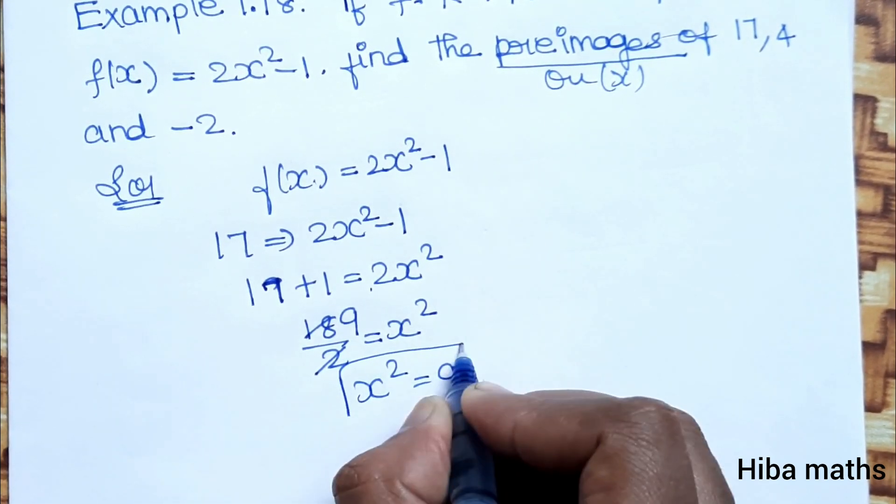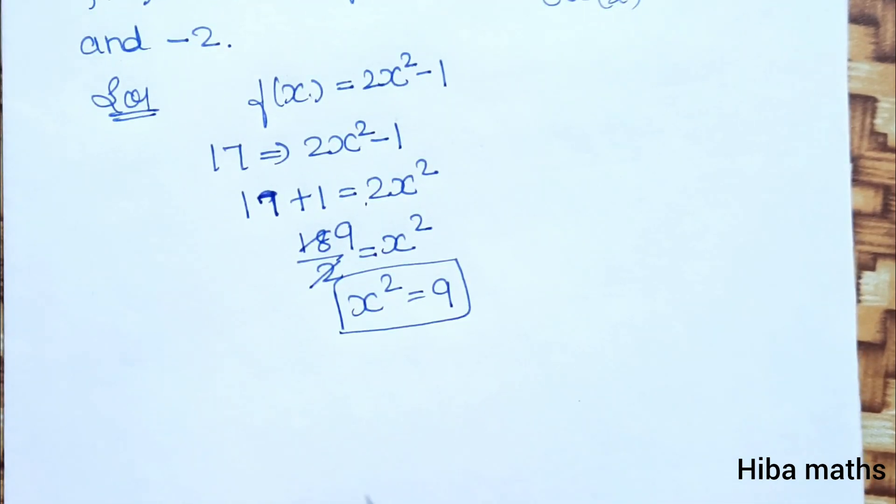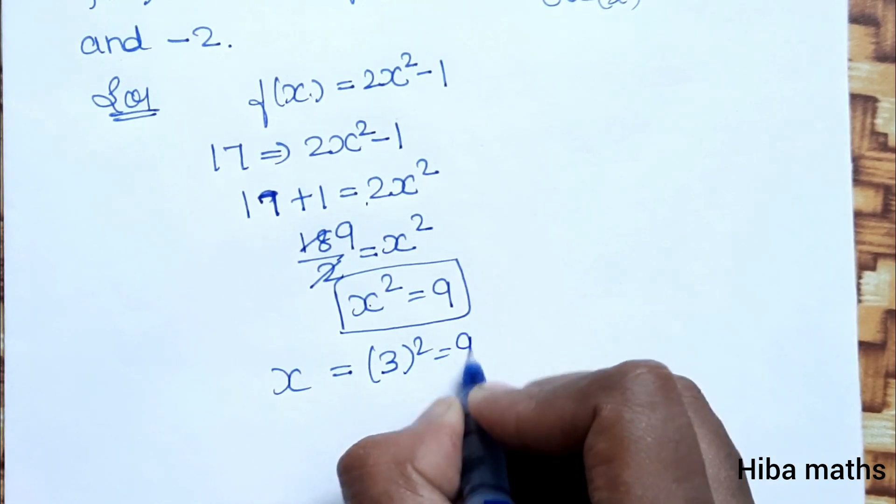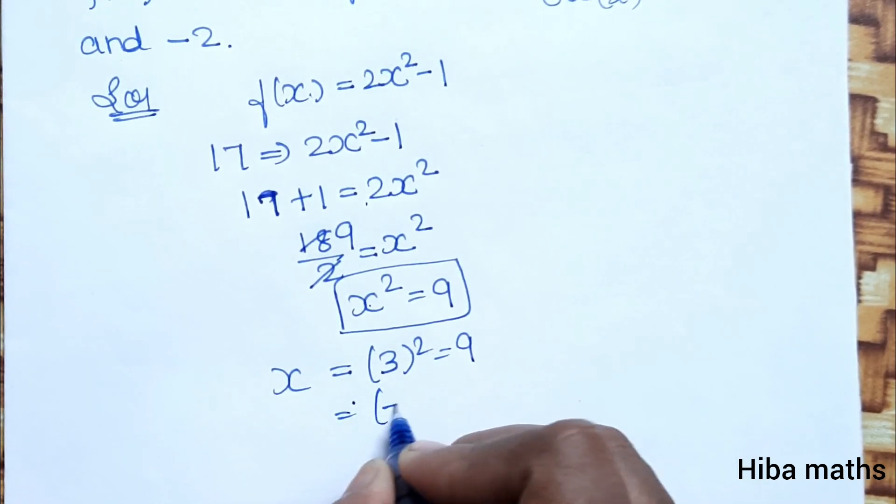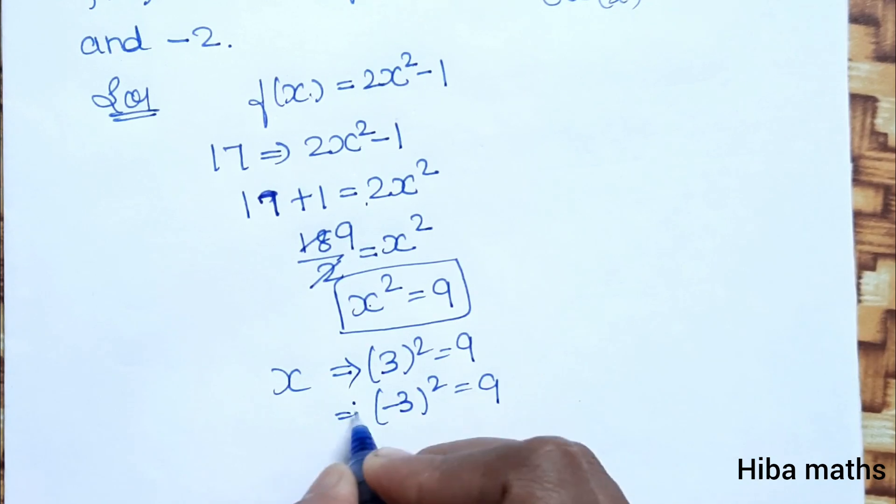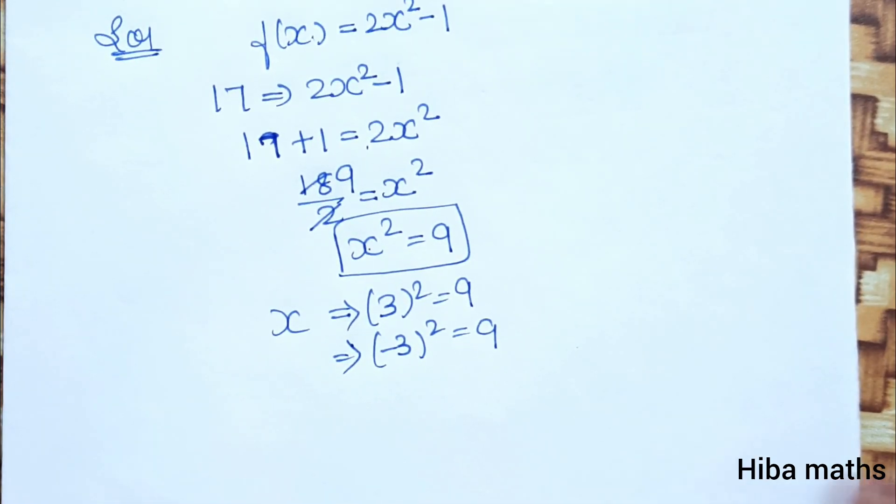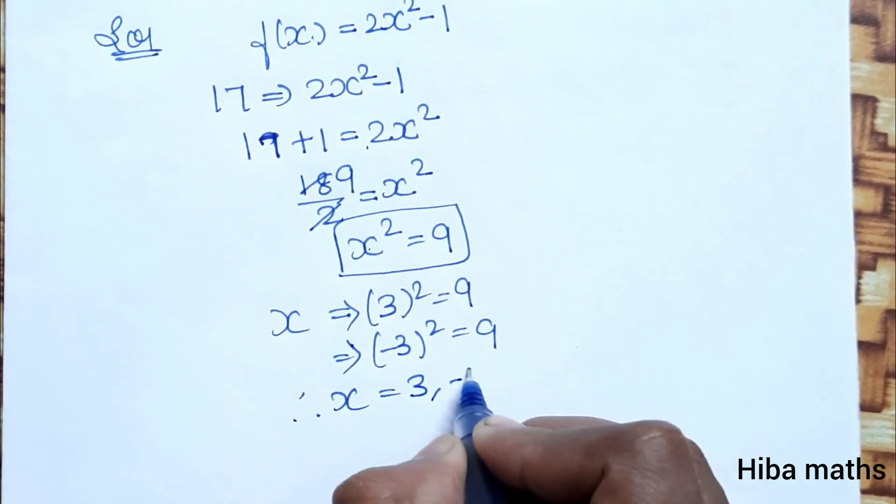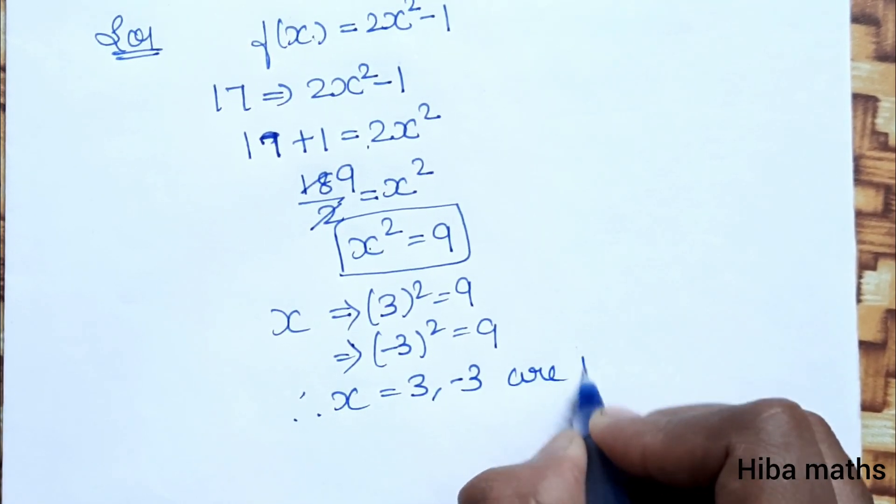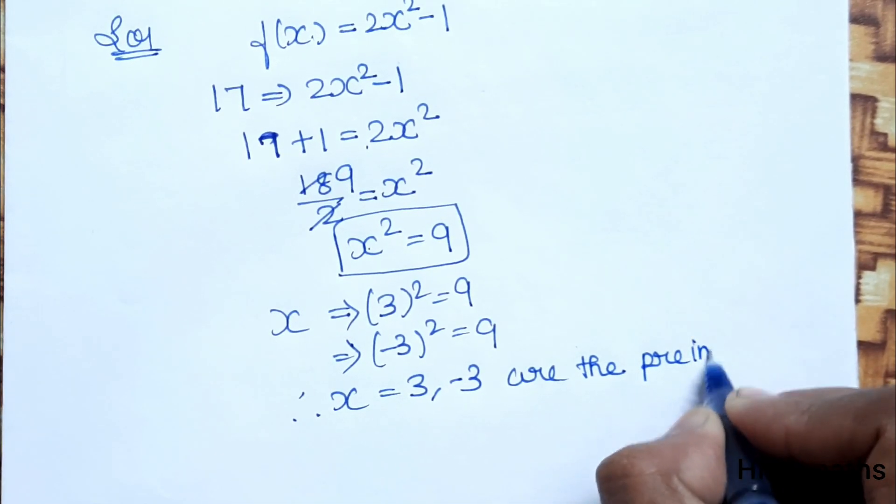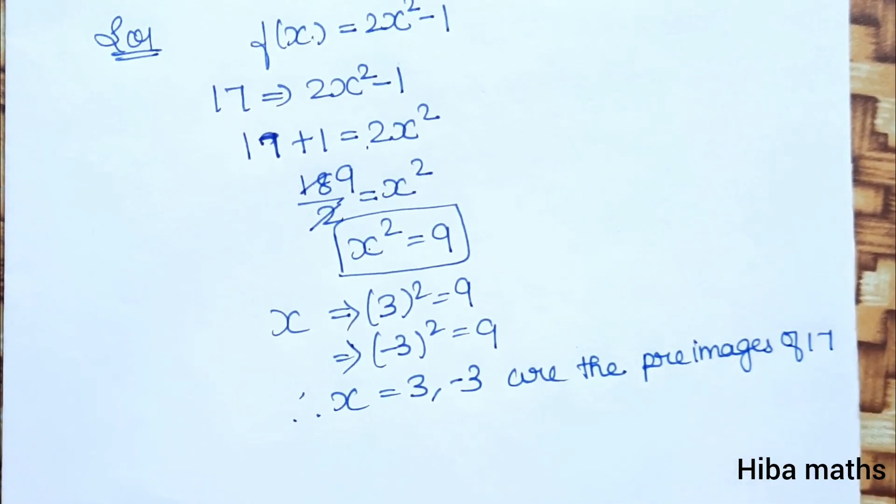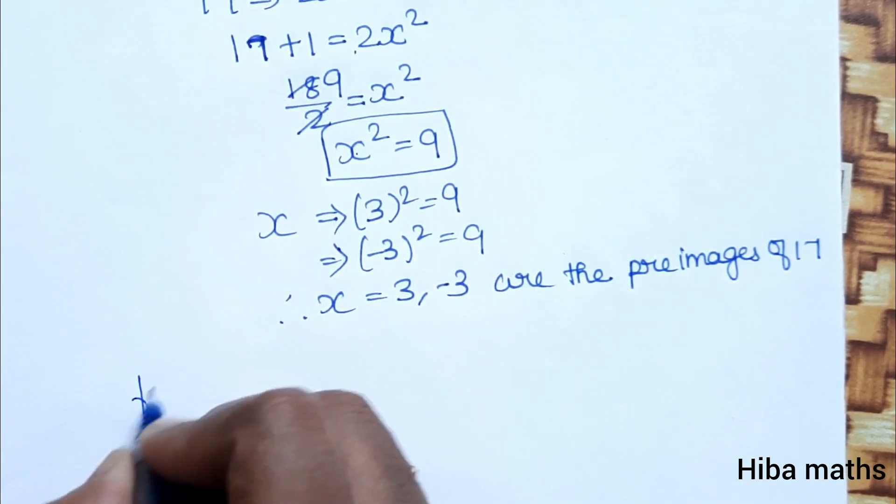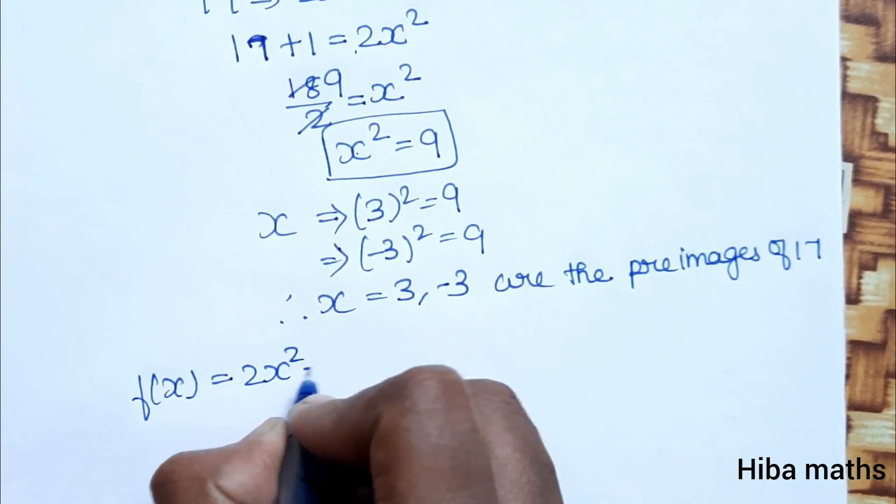So x squared equals 9. Taking the square root, x equals plus or minus 3. These are the preimages of 17.